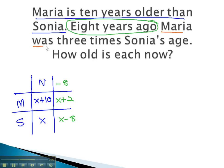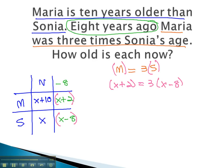The rest of the sentence will give us our equation. Maria was, or equals, 3 times Sonia's age. Again, we can replace Maria with the Maria information from the past, x plus 2. Equals 3 times Sonia's age, in the past, was x minus 8. This now gives us an equation we can quickly solve to answer the problem.